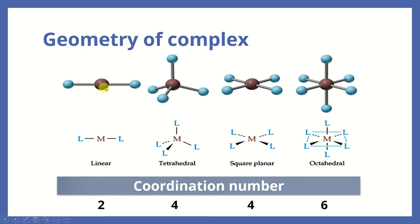If the metal ion has coordination number equal to 2, the geometry of the complex will be linear. The metal M is in the center, with one ligand on each side at a 180-degree bond angle.